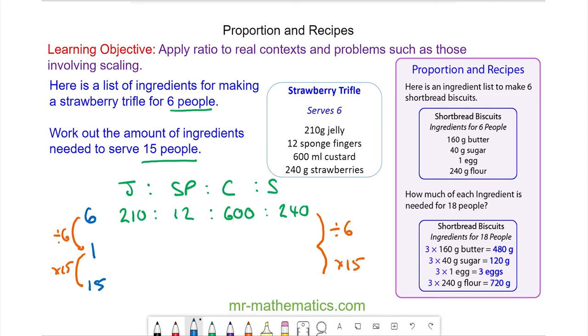For jelly, for one person I need 35 grams. I multiply this by 15 and get 525 grams for 15 people. For sponge fingers, I need 2 for one person and 30 for 15 people.